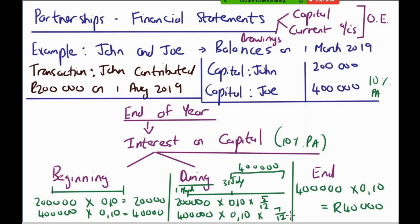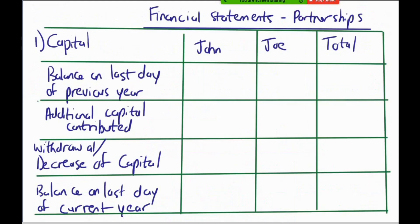That's just to help you understand the interest on capital calculation process. When it comes to financial statements of partnerships, we're working with a capital note - typically note number seven. There are two notes: capital accounts and current accounts. Your current account notes are very similar to what we did in the general ledger, except in statement form. Let's now look at our particular example.